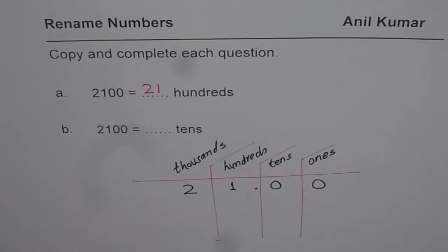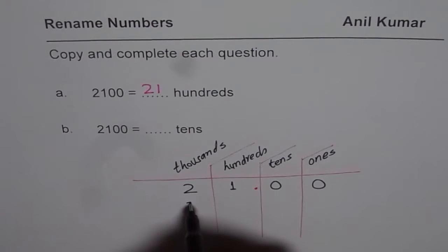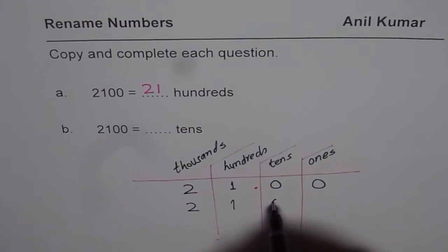Now let us see how to write this as tens. Let me rewrite 2100. 2100 again, and let us see how to write this as tens.